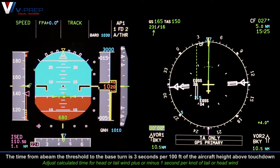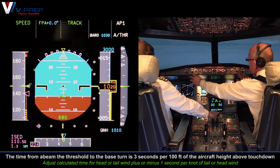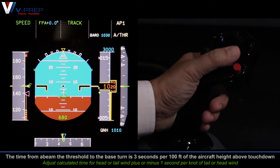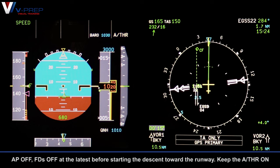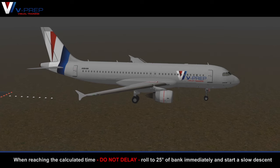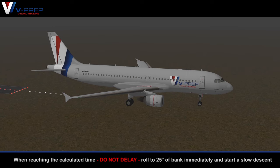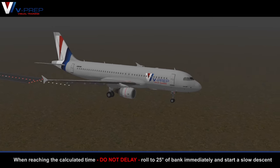The time from abeam the threshold to the base turn is 3 seconds per 100 feet of the aircraft height above touchdown. Autopilot off, flight directors off at the latest before starting the descent toward the runway. Keep the autothrust on. When reaching the calculated time, do not delay. Roll to 25 degrees of bank immediately and start a slow descent.